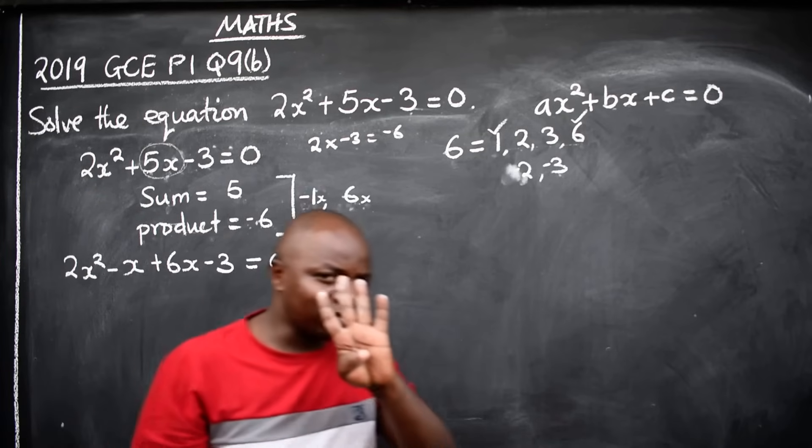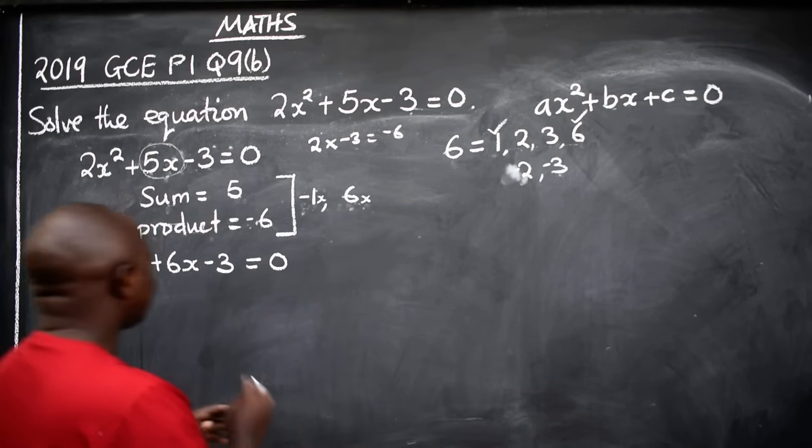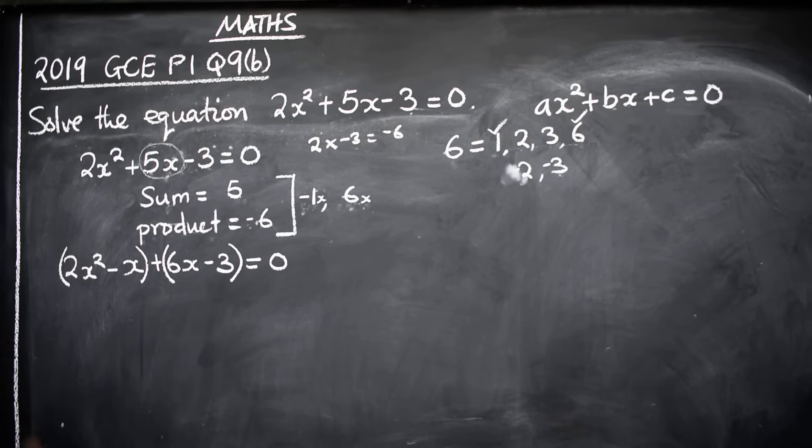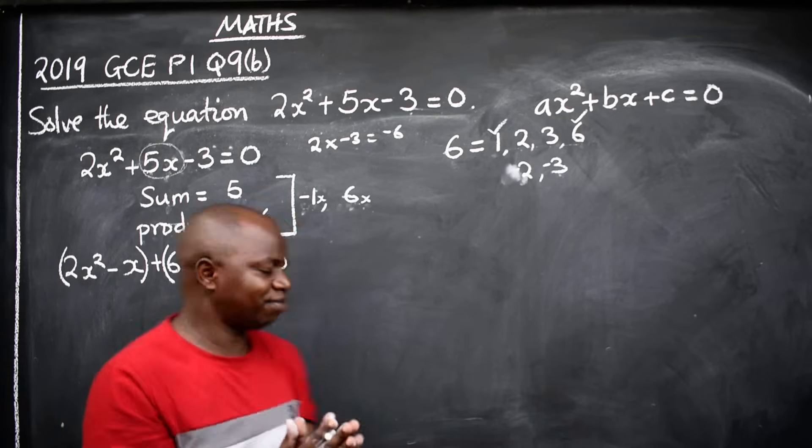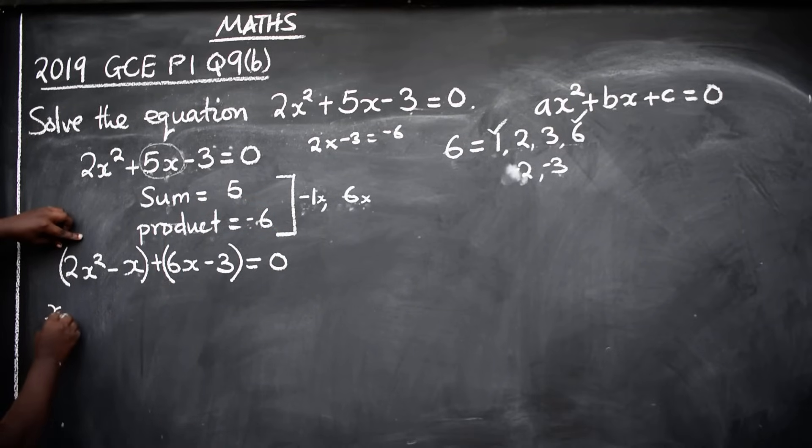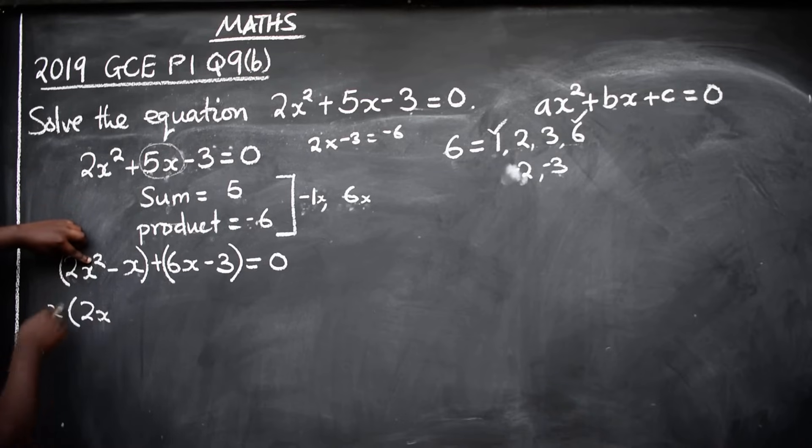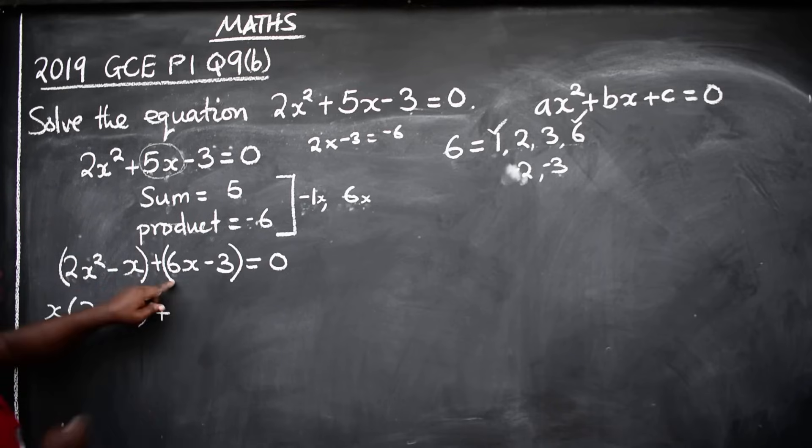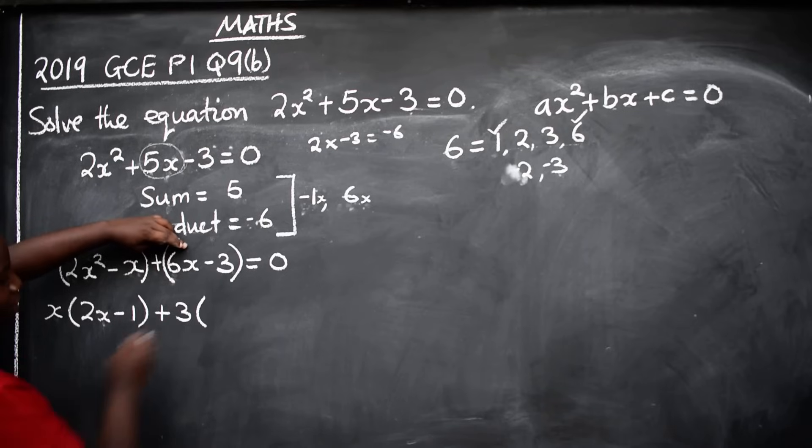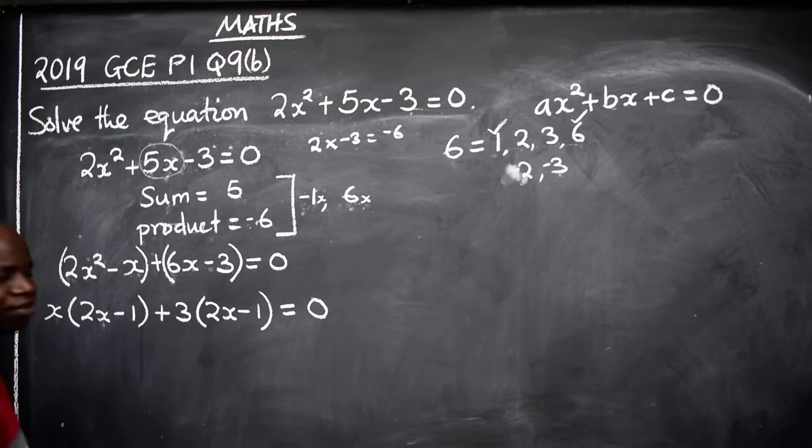Now there are four terms. Group them two by two. What next? Factorize. What is common here? x. x into 2x² and -x, we remain with 2x - 1. Plus, what is common this side? The number is 3. 3 into 6x, I remain with 2x. 3 into 3 is 1, minus 1. So we have x(2x - 1) + 3(2x - 1) = 0.